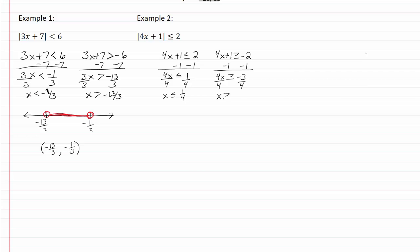So on our graph, we have negative three-fourths down here and one-fourth up here.